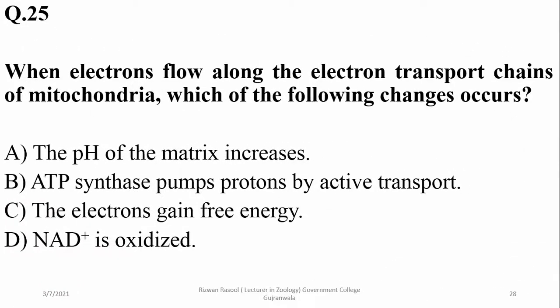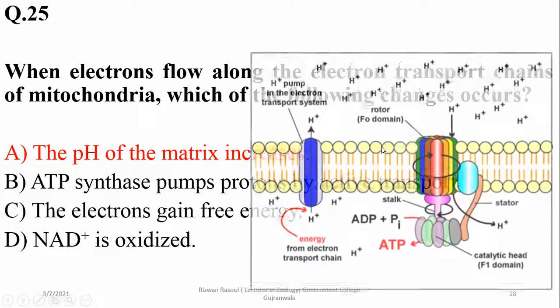When electrons flow along the electron transport chains of mitochondria, which of the following changes occurs? The pH of the matrix increases, because hydrogen ions are being pumped out of the matrix. When there is high concentration of hydrogen ions there is low pH, but when there is low concentration of hydrogen ions there is high pH. So pumping out of hydrogen ions from the matrix causes an increase in pH of the matrix.